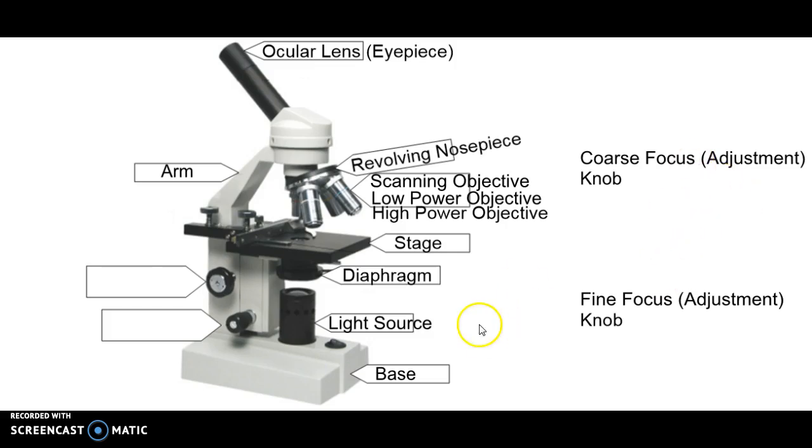Next up, we have these two adjustment knobs here on the side. The first one, the larger one, is called the coarse focus or coarse adjustment knob. This makes bigger changes. That's why it's a bigger knob. So when you guys are using your microscope, you'll notice you can actually see physical changes on the microscope when you use this adjustment knob.